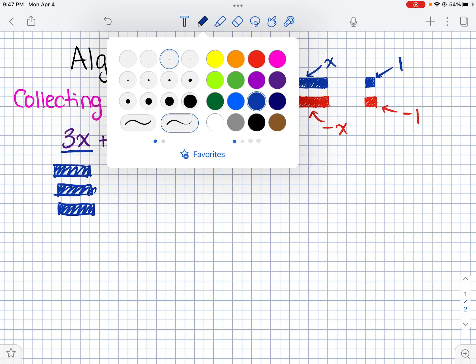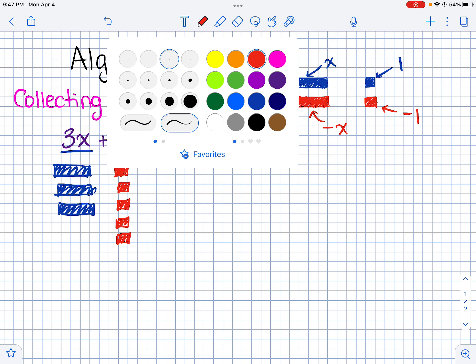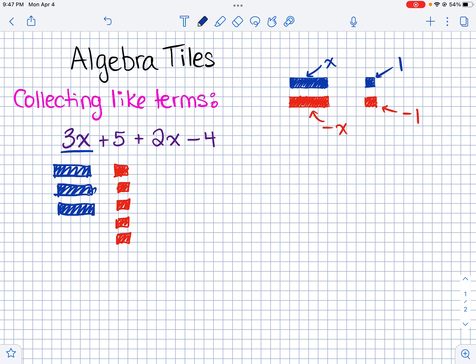And then it says plus 5, so we have 5 single tiles. Oh wait, I made a mistake. I don't know why I wasn't paying attention. This should be 5 blue tiles, because they're positive. So let me redo that. 1, 2, 3, 4, 5 blues.